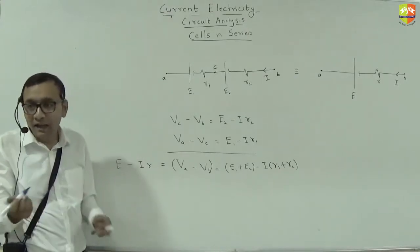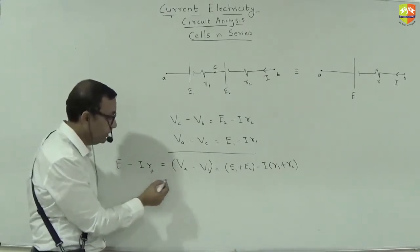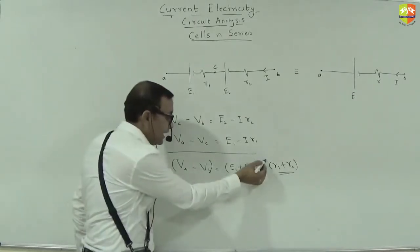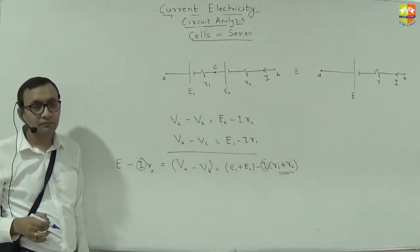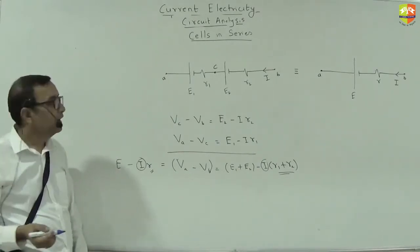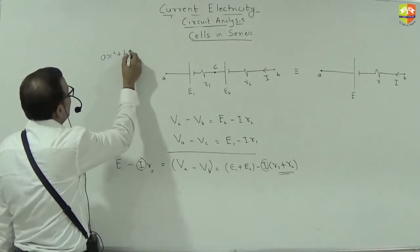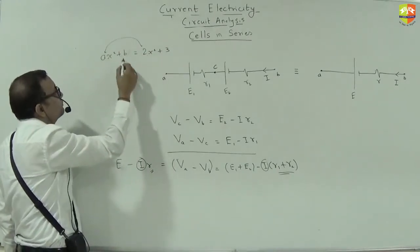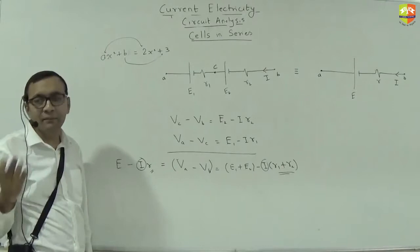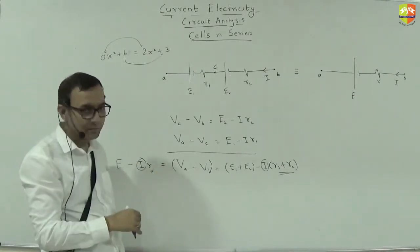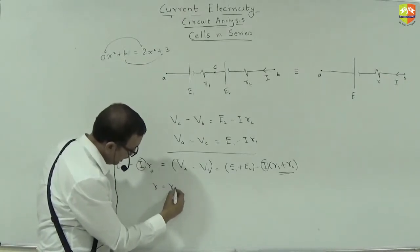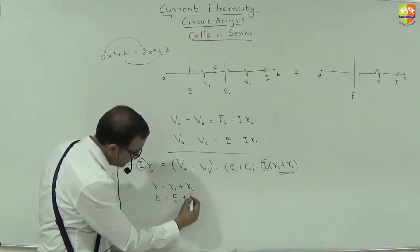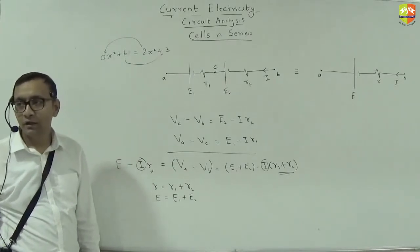Now, I is a variable. I can be anything, isn't it? So coefficient should be equal. So R should be equal to R1 plus R2. If AX square plus B is equal to 2X square plus 3, can I say A is equal to 2 and B is equal to 3? I can. X can be anything. So I am equating the coefficients of variable. So R is equal to, write down, R1 plus R2 and E is equal to E1 plus E2.